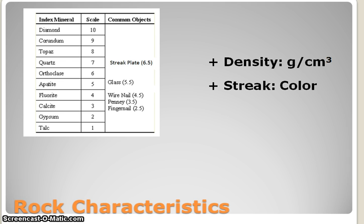We tell one rock apart from another through several tests. The first is how hard is it, relatively speaking to other things? How dense is it — you may think of this as heaviness, but it's compared in grams per centimeters cubed. And also the streak or color. For example, no matter what color iron ore is, taconite tends to be a grayish black, and really high quality iron ore itself will streak red on a white ceramic plate. It's a kind of a tell.